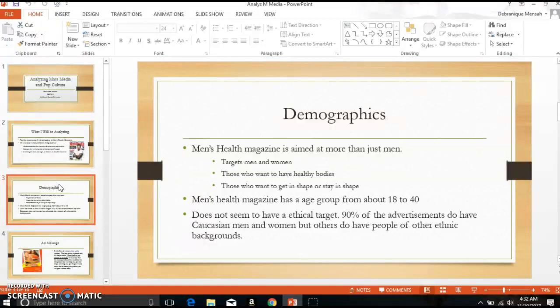Men's Health magazine has an age group from about 18 to 40. That does not seem to have an ethical target. Ninety percent of the advertisements do have Caucasian men and women, but others do have people of other cultures.